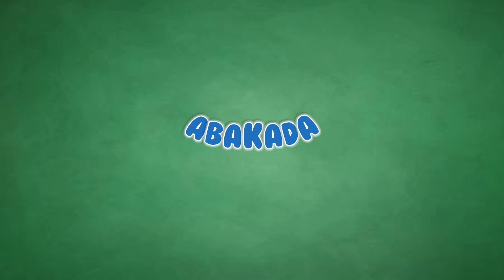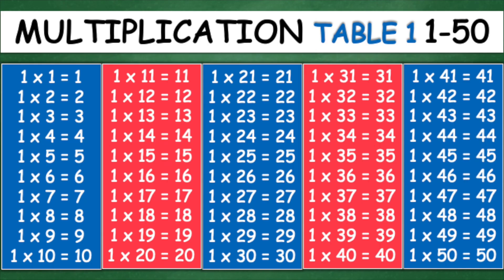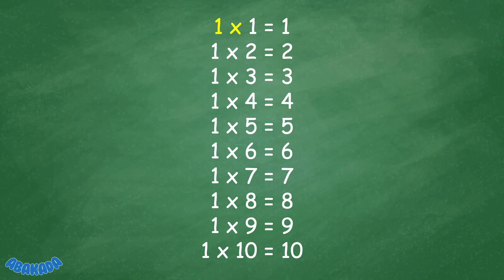Multiplication table 1. 1 times 1 equals 1, 1 times 2 equals 2, 1 times 3 equals 3, 1 times 4 equals 4, 1 times 5 equals 5, 1 times 6 equals 6, 1 times 7 equals 7.